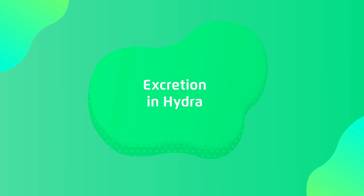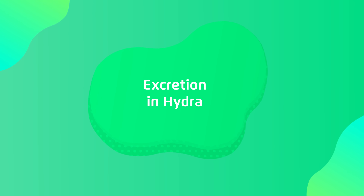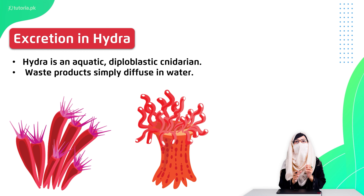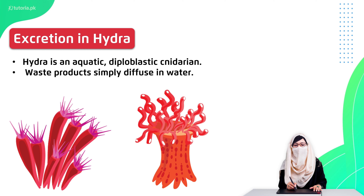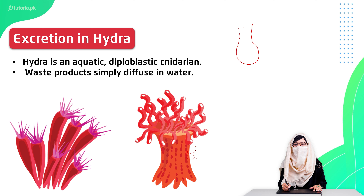First, let's talk about Hydra. When I talk about Hydra excretion, we all know that Hydra is an aquatic diploblastic cnidarian, which means that it will simply diffuse waste into the water. In every cell, the waste product, if it is produced in the outer lining, will directly excrete out and diffuse. Similarly, the internal lining, which we call the internal cavity, the material is diffused and released through the water current into the environment.